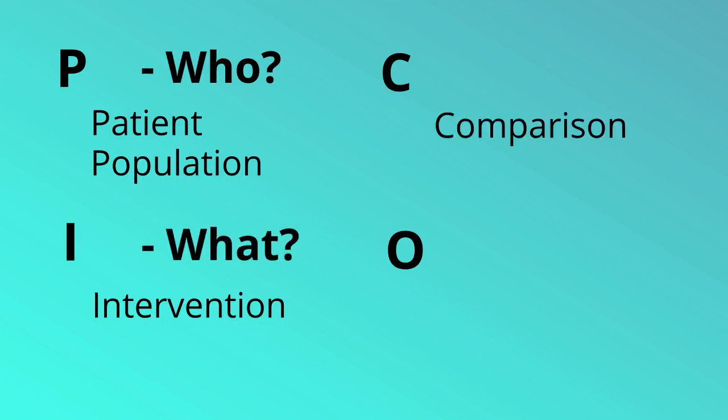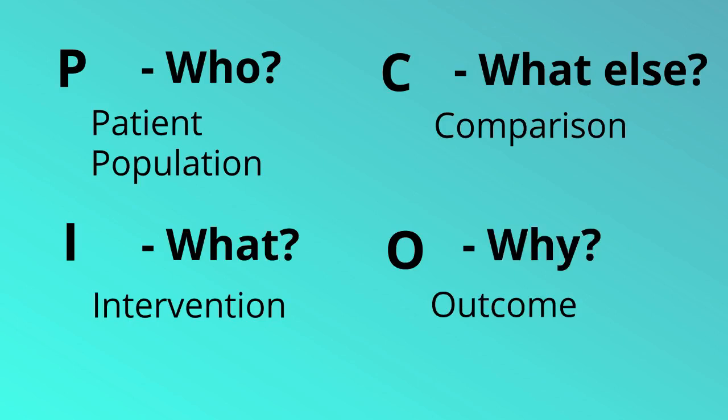C stands for comparison. What else are you comparing that intervention to, if anything? And O stands for outcome. Why was the intervention carried out? Accurate diagnosis or reduction of a symptom, for instance?